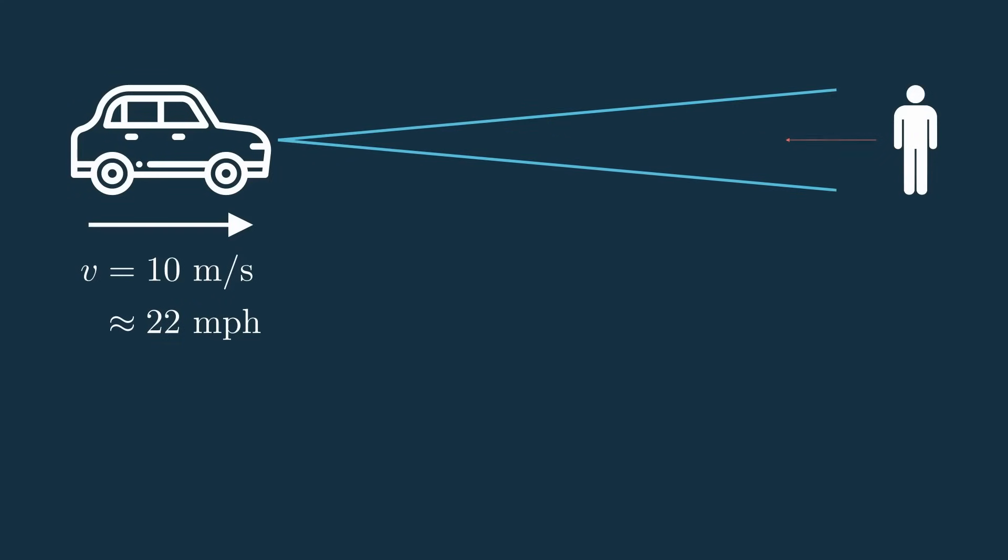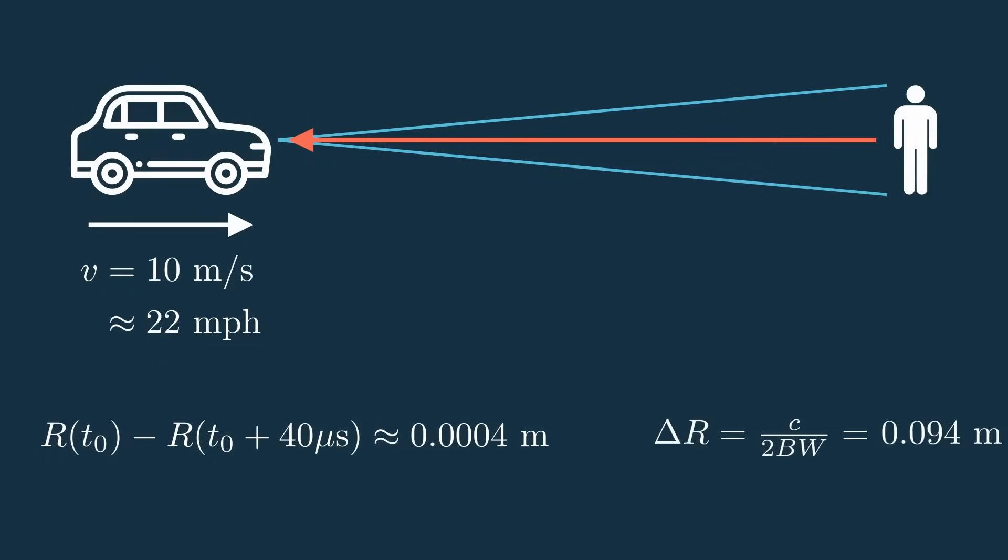So going back to the measurement scene, if your car is coming towards someone 20 meters away at 10 meters per second, you definitely want your car to notice because in only two seconds you can hit this person and do some serious damage. But if we take a measurement, find the person's distance, and then take another measurement at the next ramp, which is 40 microseconds later, even though you're heading towards this person at dangerous speeds, the distance it traveled in 40 microseconds is only 0.0004 meters. And given that the system's bandwidth is 1.6 GHz, the range resolution would be more than 200 times larger than this range shift, so we can't detect this difference at all.